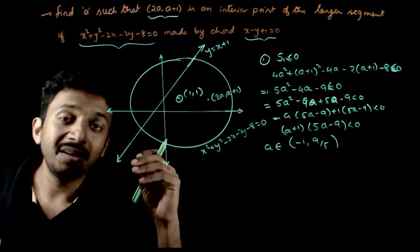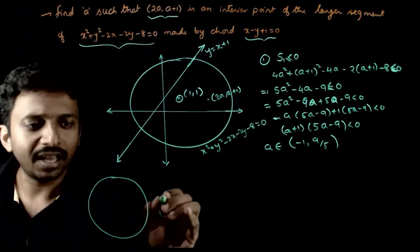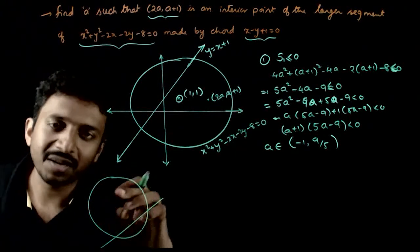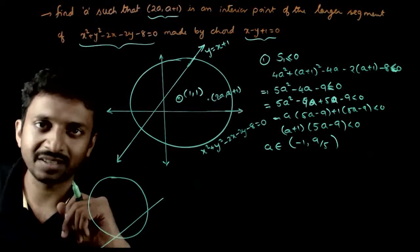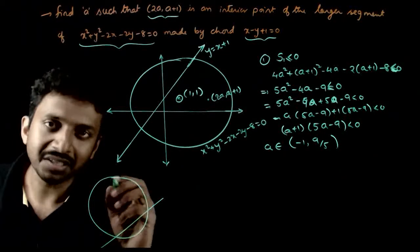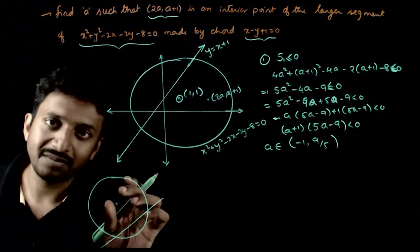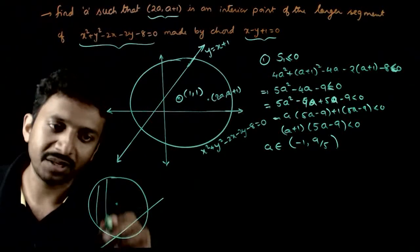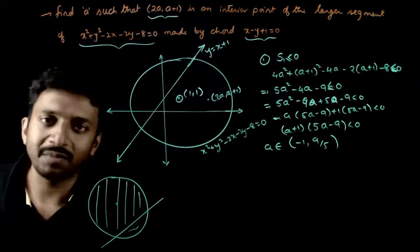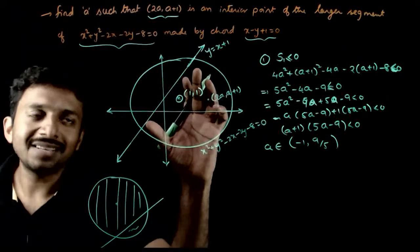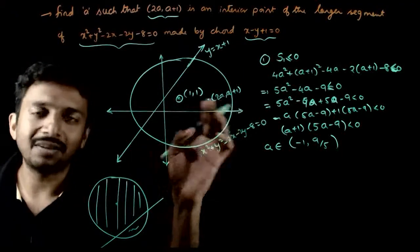Now, the point must also lie in the major segment made by this line. How do we decide which is the major segment and which is the minor segment mathematically? The segment that contains the center is the major segment, and the segment that does not contain the center is the minor segment. So I need to make sure that my point lies on the same side as the center — that will ensure it lies in the major segment.